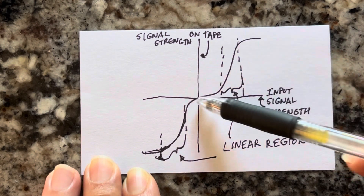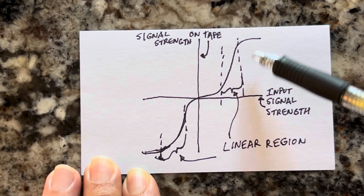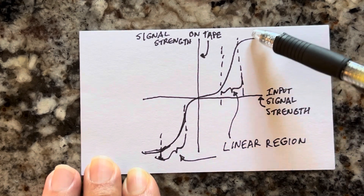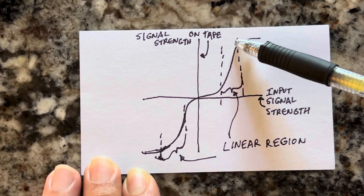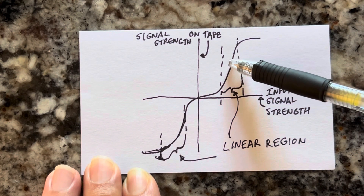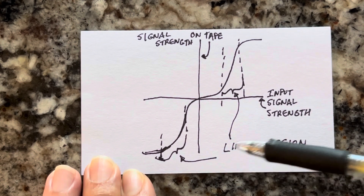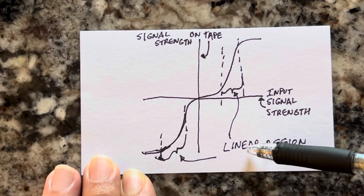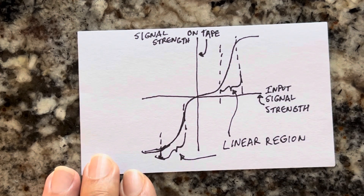The tape response curve is non-linear. Whatever waveform you put through into the input signal comes out all messed up based on these relationships. High signals don't get a response, low signals don't get a response. But when you're in the linear region, you get a linear response on the tape based on the signal you put in. So the secret is: how do we get the tape into the linear region? The way we do that is by using AC bias.